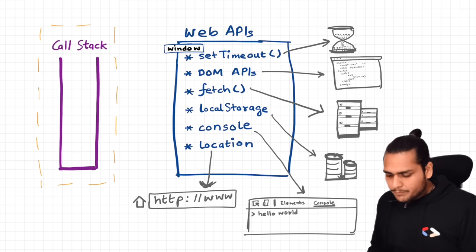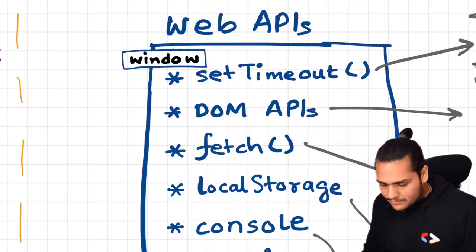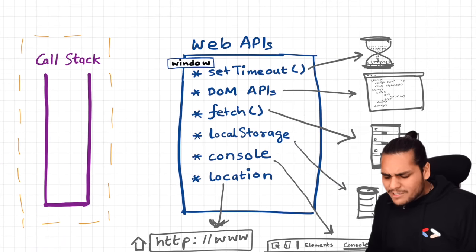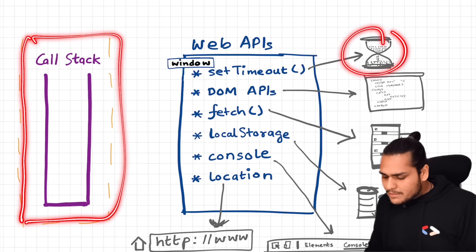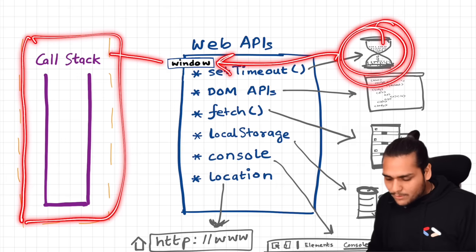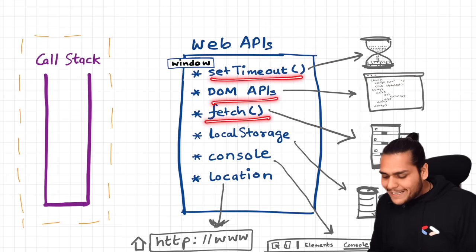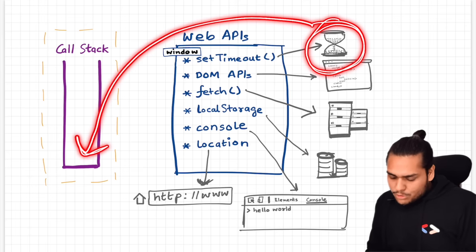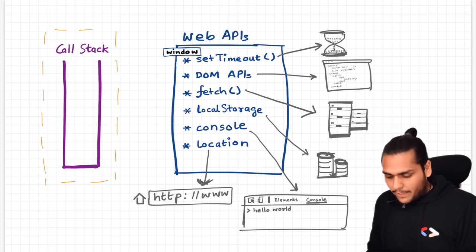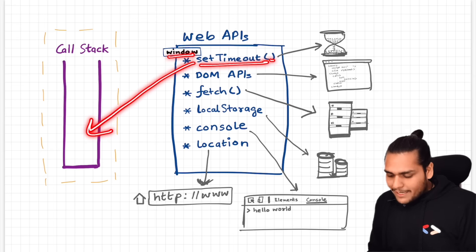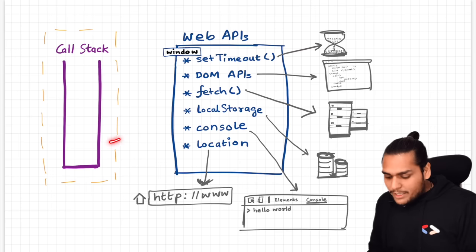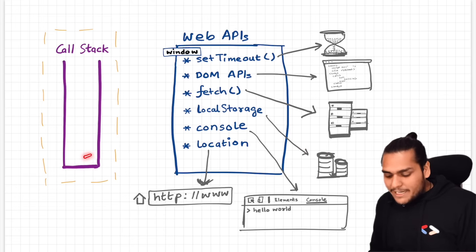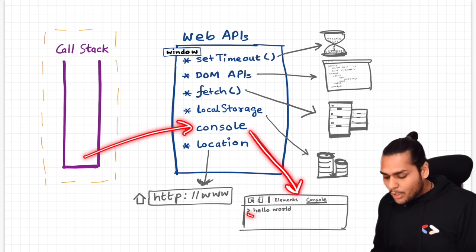We get access to these superpowers inside this call stack because of the global object. What is this global object? This global object is the window keyword. In case of browsers, the browser gives the JavaScript engine the facility to use all these superpowers — this superpower of timer — through a keyword known as window. All these things you see are the web APIs.